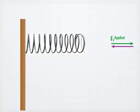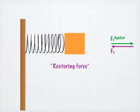If an object is attached to the end of the spring, this reaction force from the spring, also called the restoring force, is applied to the attached object. The restoring force of an ideal spring is given by Hooke's law.